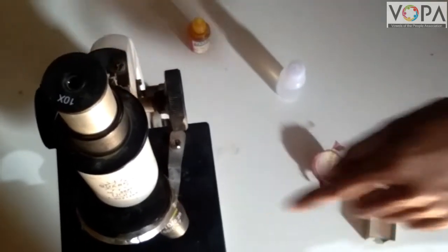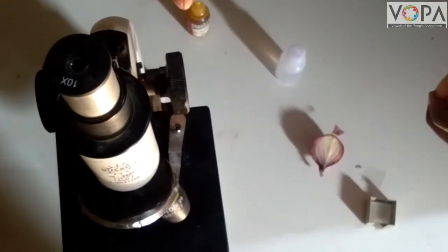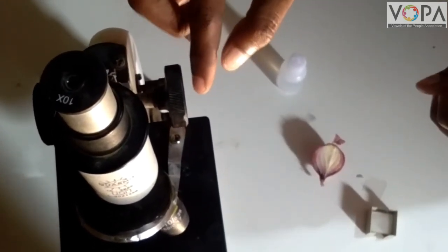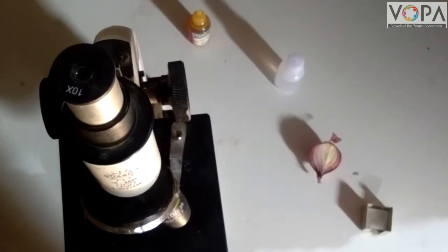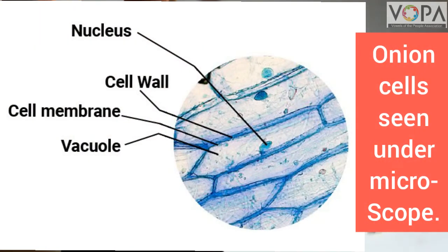In this way, we can observe the cell of onion. In the picture given side, we can see the structure of cells of onion thin skin.